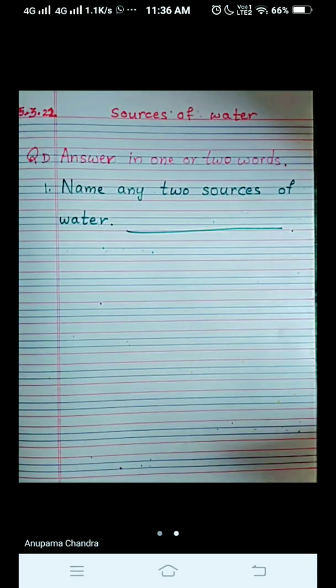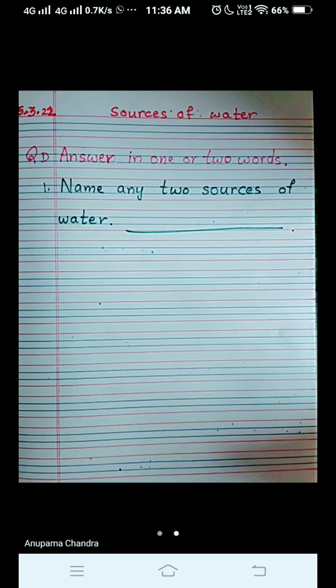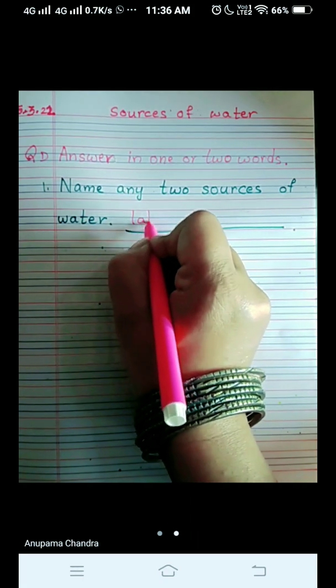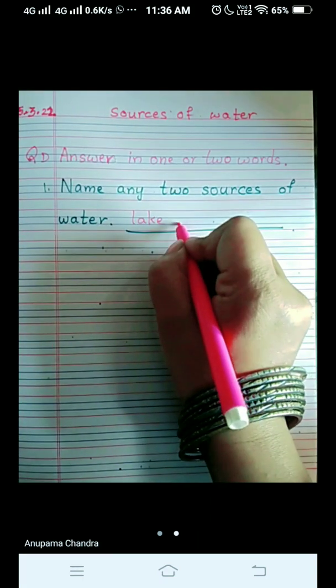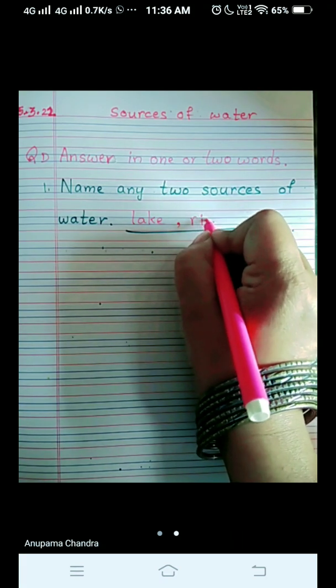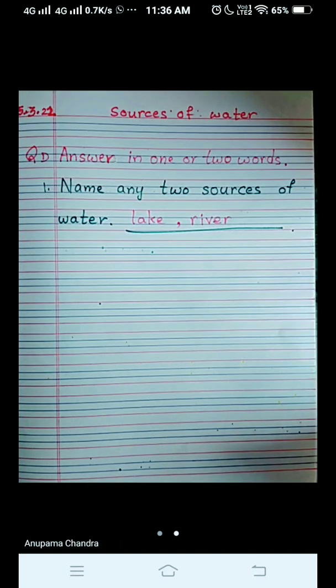And give a big dash for writing the answer as we have to write two of them. And you can write any of them you want children. Let's take any two. I take Lake, L-A-K-E lake, comma, River, R-I-V-E-R river. Any two sources of water? Lake and river.